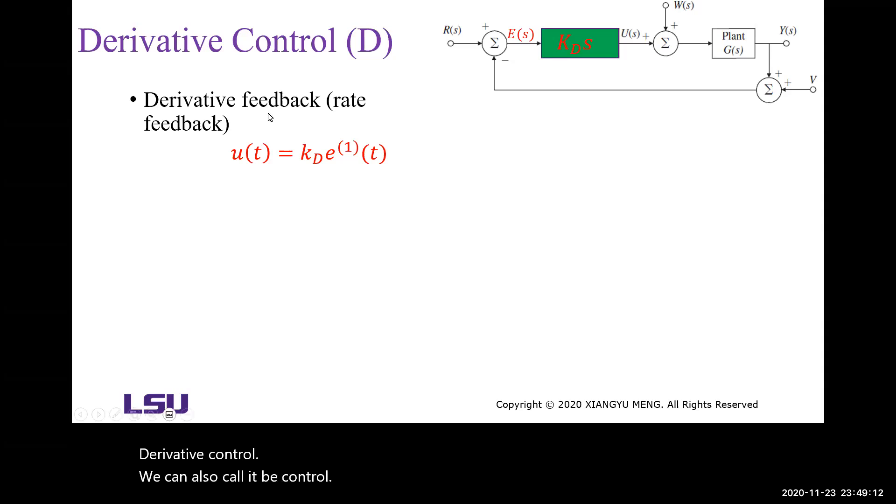For D control, the control signal is proportional to the derivative of the system error. KD is called the derivative gain.